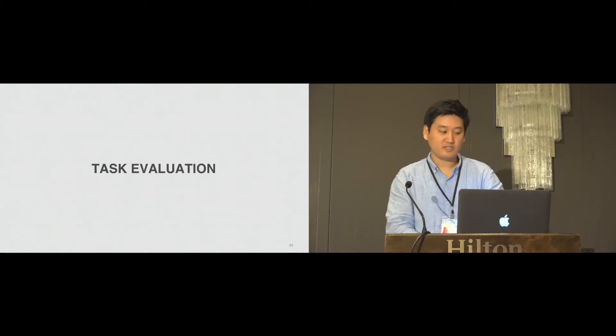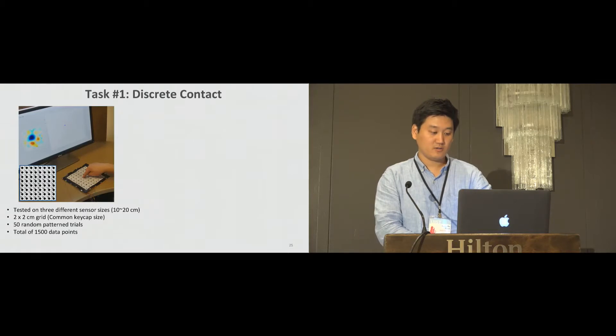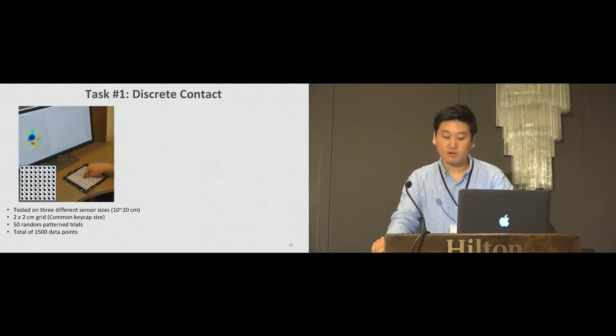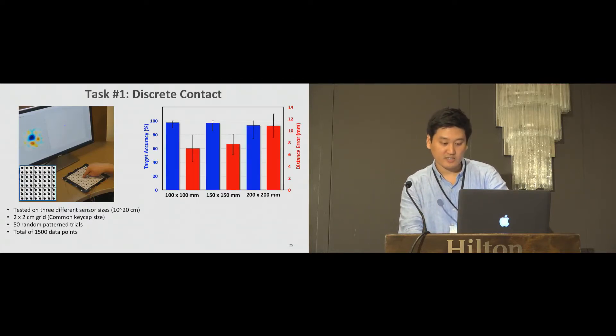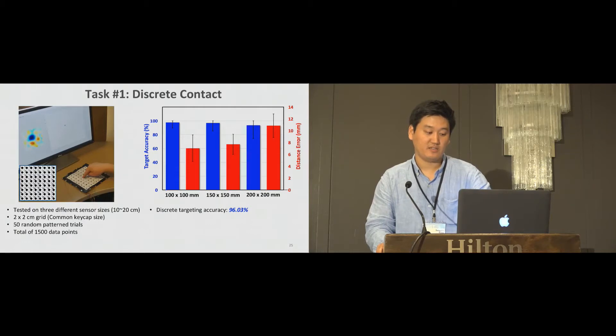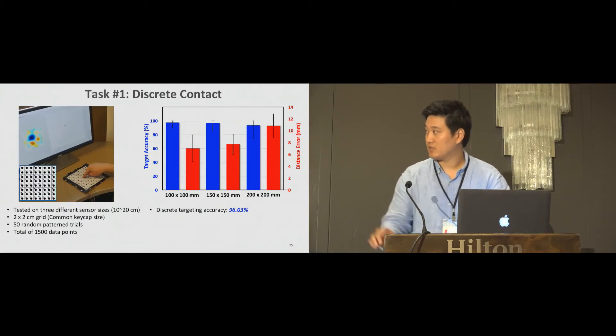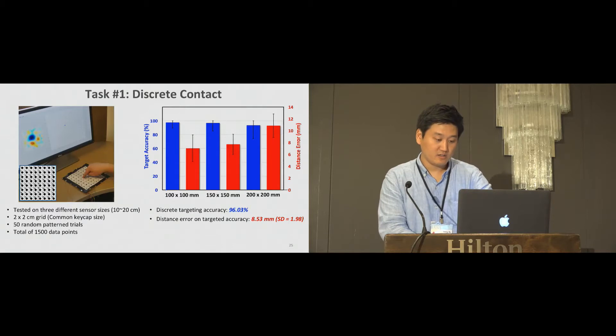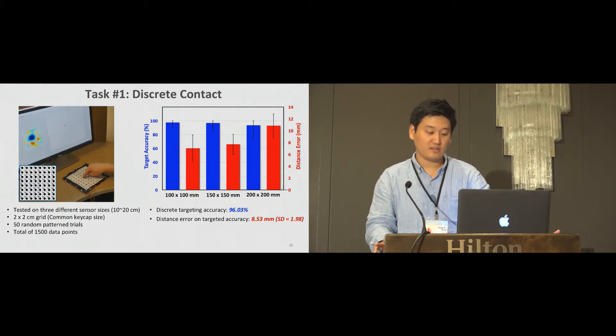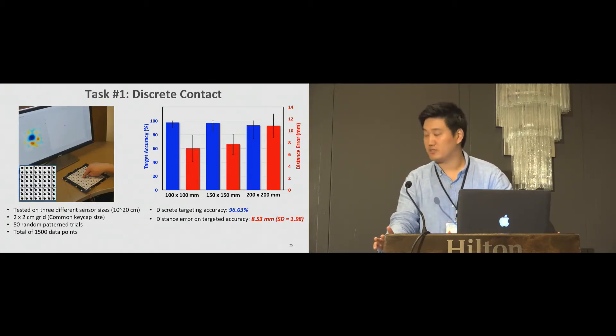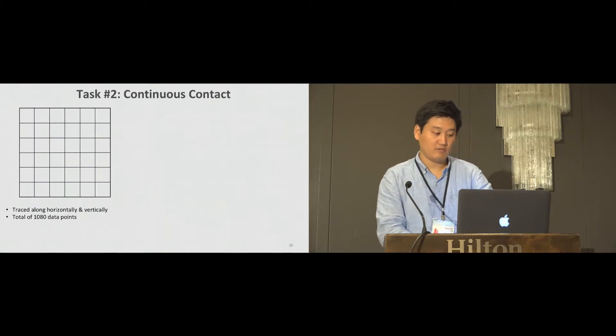Now we build our sensor with real users. First, we look at the discrete contact performance. We use 2 by 2 centimeter grid on different sensor sizes and look at both targeting accuracy and distance errors. The overall discrete targeting accuracy came out as 96 percent. As you can see, this is the blue bars. The red bar indicates the distance error which came out to be 8.5 millimeters. The high targeting accuracy across our sensor sizes indicate that our prototype supports robust discrete contact localization.